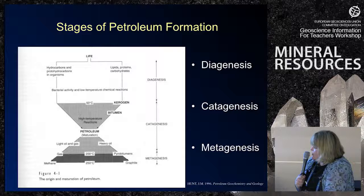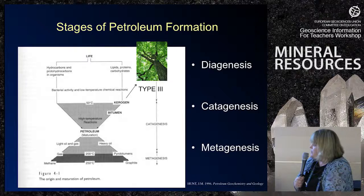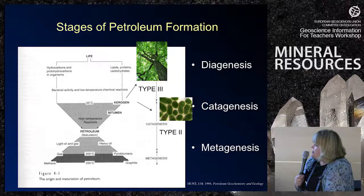The type of kerogen depends on the type of organic matter that contributed to it. Type 3 kerogen is largely derived from land plant material containing spores and pollen. Type 2 kerogen, very hydrocarbon-rich, is largely from algae, and these are gas-prone and oil-prone-type materials.